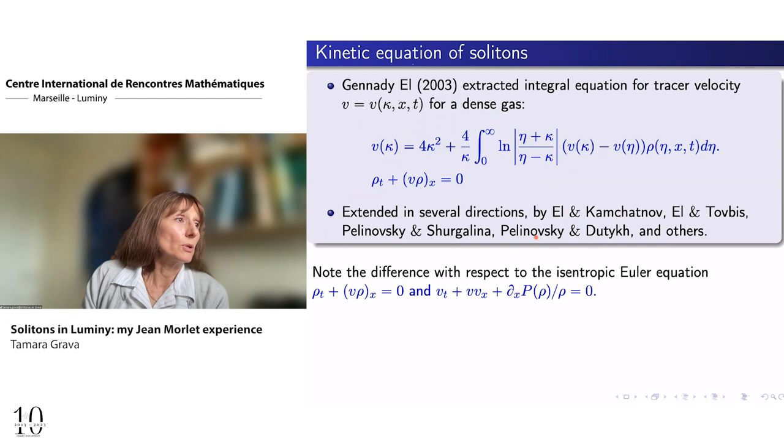So this is now an integral equation. So this V, in the previous slide, was replaced by the free soliton velocity. There was four k square minus four eta square. And now we get an integral equation. And so these two equations together take the name now Zakharov-El kinetic equation. And they have been extended. So this is what was derived for KdV, and they were extended in several directions to many other equations by many contributions. Here we have El, Kamchatnov, Conti, Pelinovsky, and many others. So I want to stress the difference between this kinetic equation for solitons with respect to what we know for, for example, the isentropic Euler equations. We have a conservation law for the density, but the velocity itself satisfies a conservation law, where here p is the pressure of the density. Okay, so this is really a different equation. And so the main feature here is that the velocity satisfies an integral equation where this kernel is coming from the soliton interaction. So the structure is obtained from two soliton interactions.